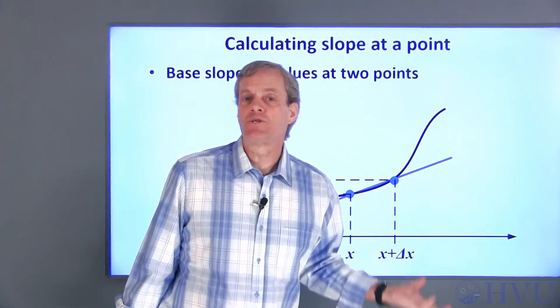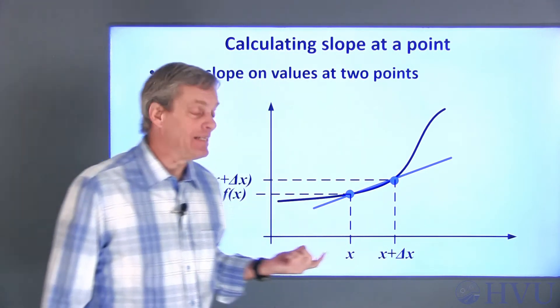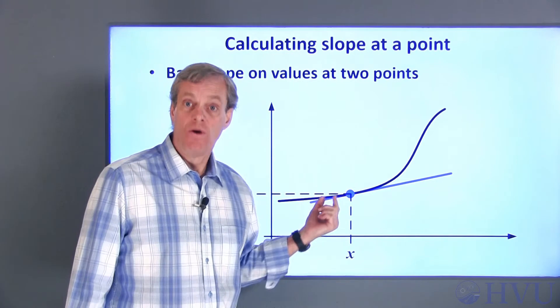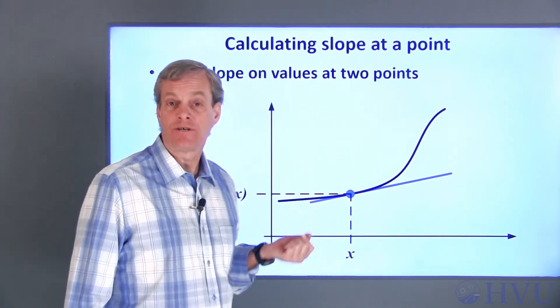Now, to get the actual slope, we need to keep making delta x smaller and smaller until it's almost zero. When delta x is zero, we get the actual slope or tangent to the curve at x.